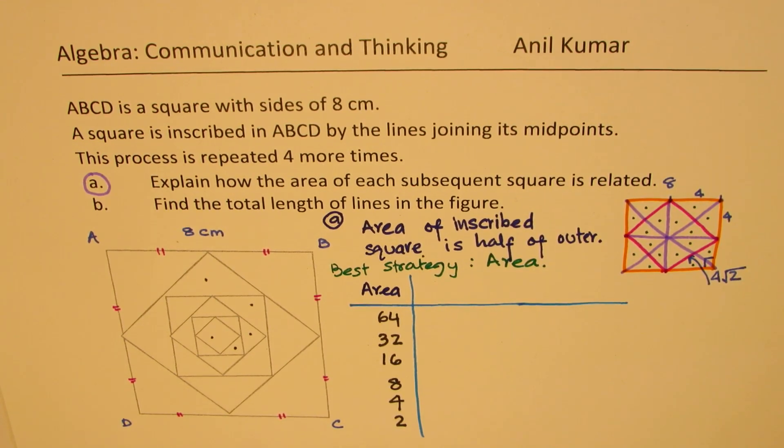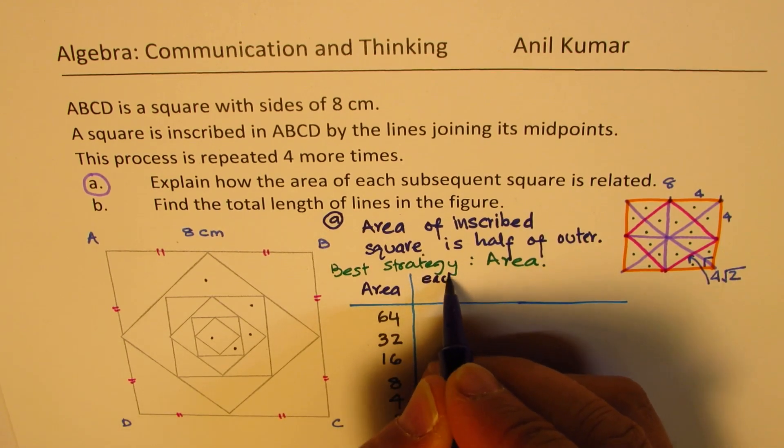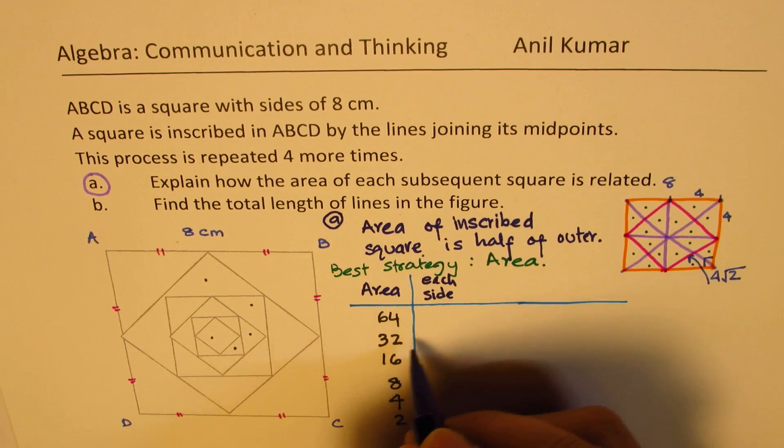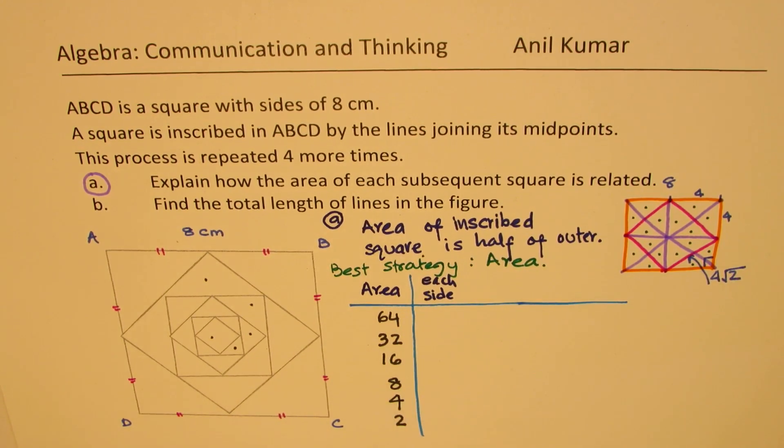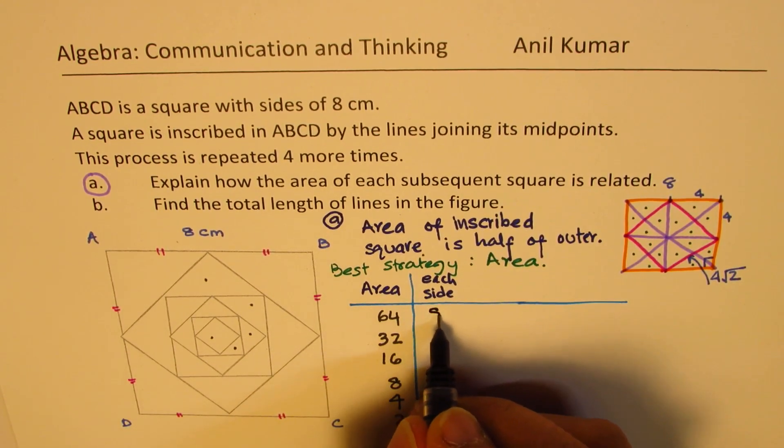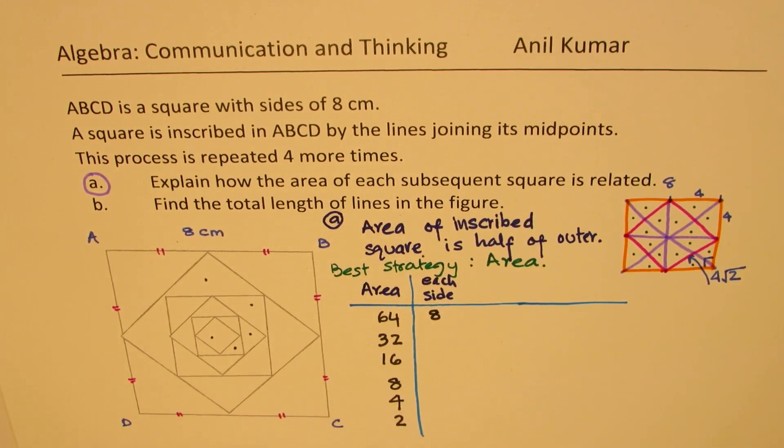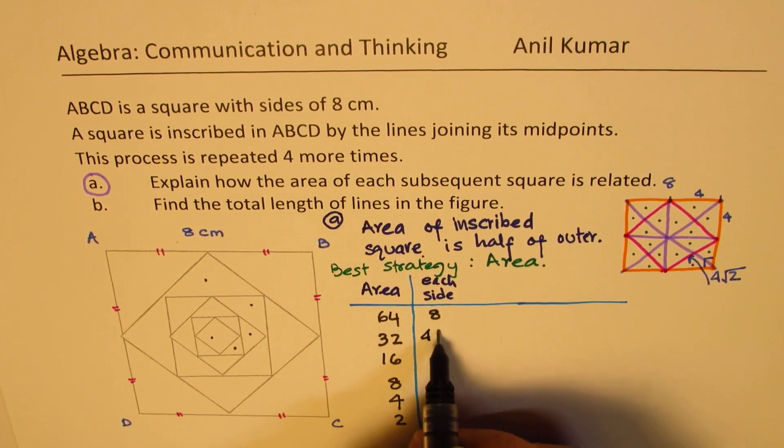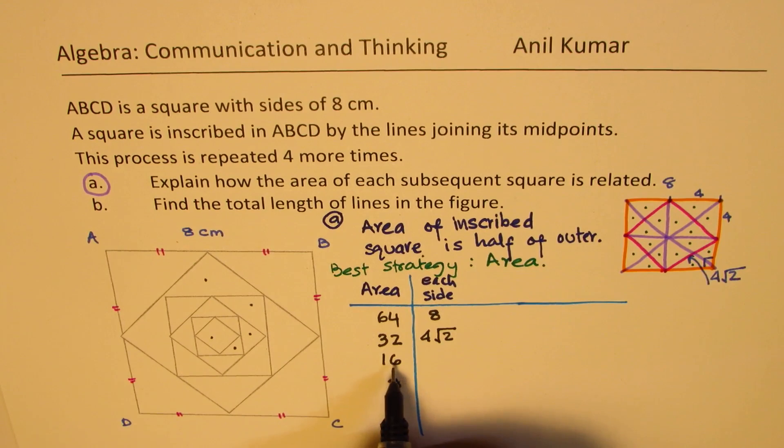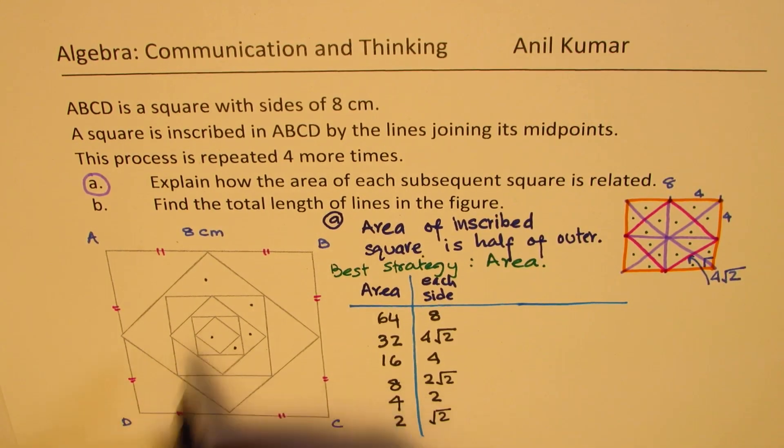Now what are the side lengths? Each side will be square root of this. For the first one we are already given square root of 64 is 8. Now square root of 32 is like 16 times 2, it could be written as 4 square root of 2. For 16, square root is 4. For 8, 4 times 2, that means 2 square root of 2. For 4, the side length will be 2. And square root of 2 will be the dimension for the last one. So that is each side.